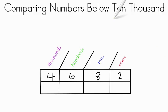Hi there, today we're going to practice comparing numbers below 10,000. So to compare numbers, the first thing we need to do is look at a number and remember its place value. So we have the number here, 4,682.